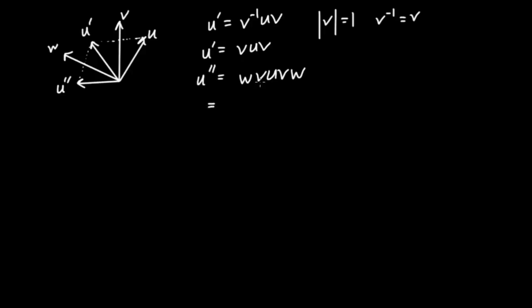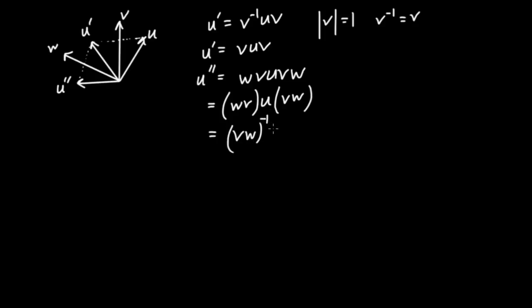We discovered in the previous video that the composition of two reflections is the same as a rotation. Making the expression more intelligible by adding parentheses, we have (wv) times u times (vw). We observe that wv is the inverse of vw, because wv times vw equals 1. So we can write this as (vw) inverse times u times (vw). The vectors v and w have an angle between them — the angle from v to w — which I'll call theta over 2, and you'll see why it's the half angle shortly.